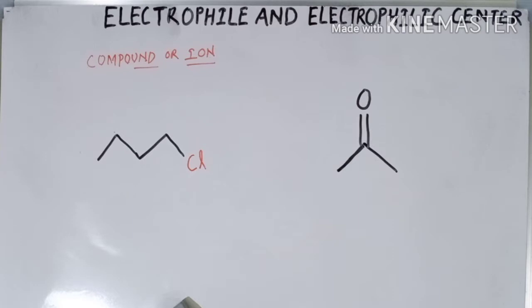Due to this deficiency of electron density, they carry a slightly positive charge. The atoms which carry this slightly positive charge become an electrophilic center. Let's understand this concept with an example. There are two compounds I have drawn here.